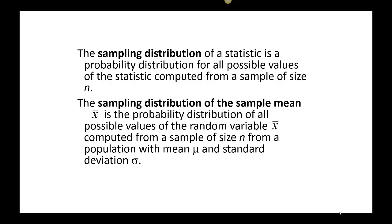In other words, we are taking samples from the population of size n — that's the sample size — and we are going to compute the averages or the means from these samples. Why do we do this? We know that we can determine the area under the curve once we have an approximately normal distribution. We go to the z-table, and that will tell us the proportion or probability of a particular characteristic.